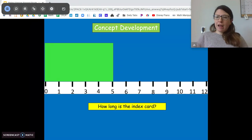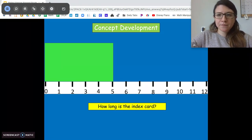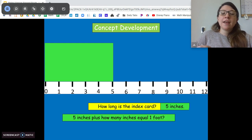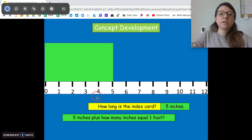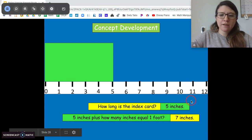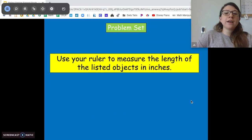Good. Let's measure an index card. How long is this index card? Don't forget to tell me your units. Very good. Five inches. Five inches plus how many inches will give us one foot? Good. About seven inches. So five inches plus seven inches equals 12 inches or one foot. Awesome.